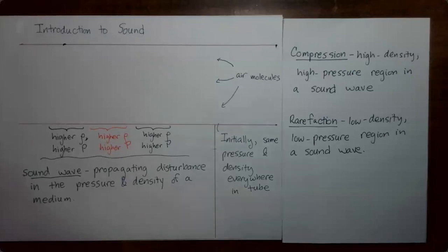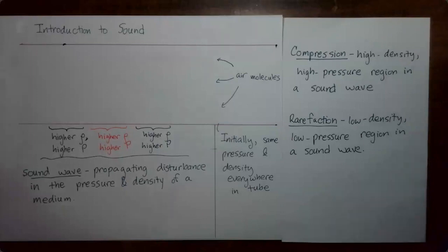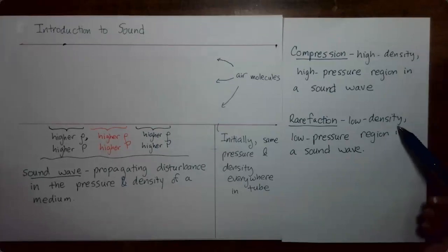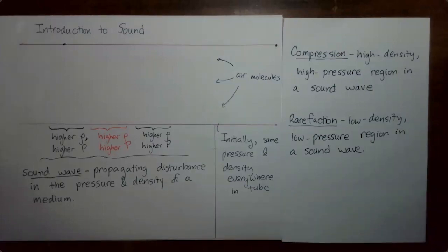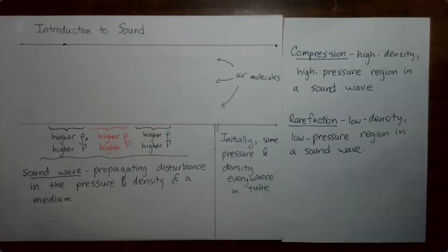Let's sum up. In this video, I have introduced you to the idea of a sound wave, which is a propagating disturbance in the pressure and density of a medium. We have learned that within a sound wave, there can be a compression, which is a high density, high pressure region, but there can also be a rarefaction, which is a low density, low pressure region in the sound wave. In the next video, we're going to see how compressions and rarefactions come together to make sound waves, which can be detected by the ears of living things such as ourselves.